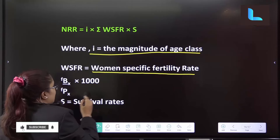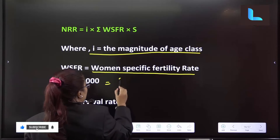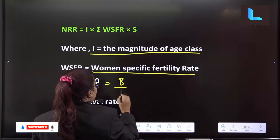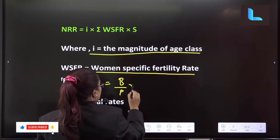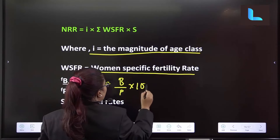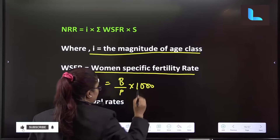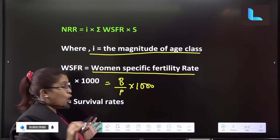Next, to calculate this, we use the formula: B divided by P, into 1000 — especially for the female population.